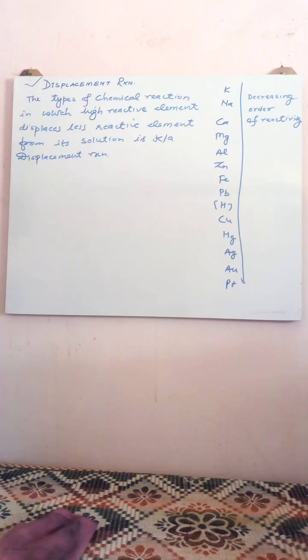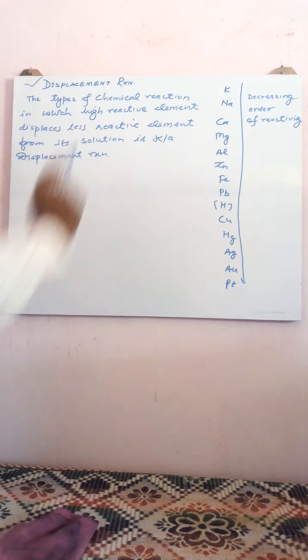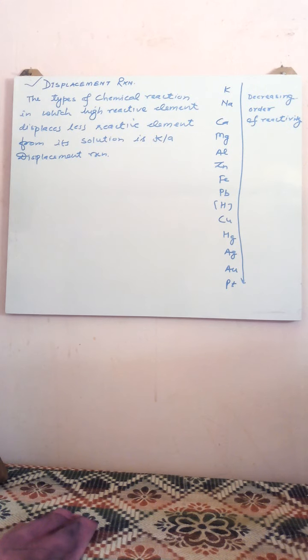First we will understand what is displacement reaction. The type of chemical reaction in which a highly reactive element displaces a less reactive element from its solution is known as displacement reaction.